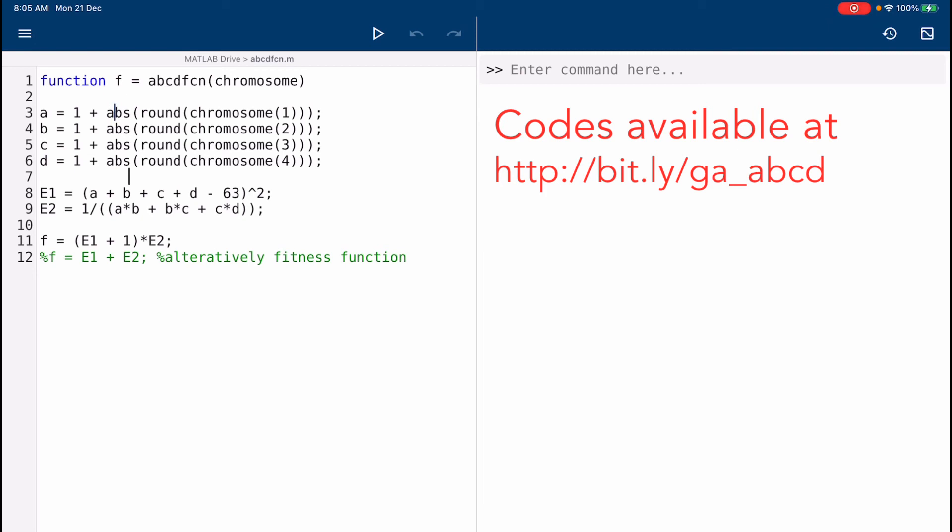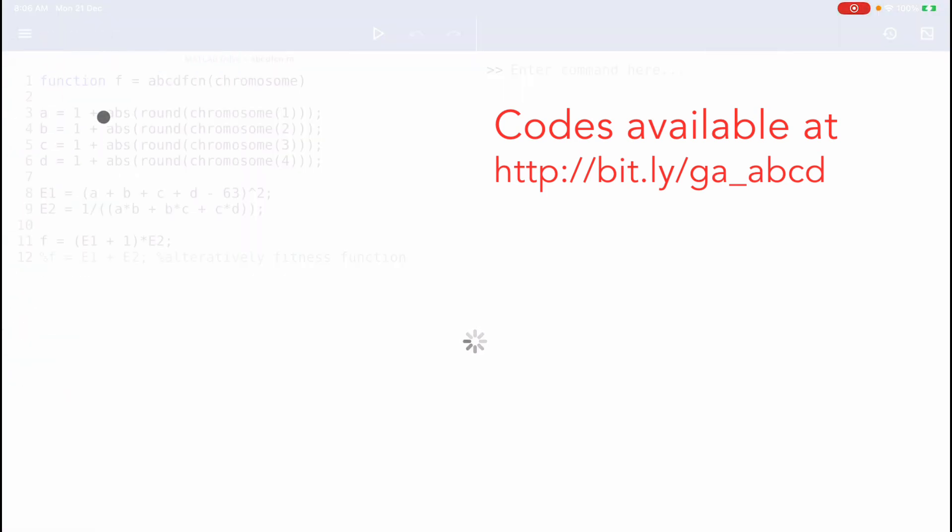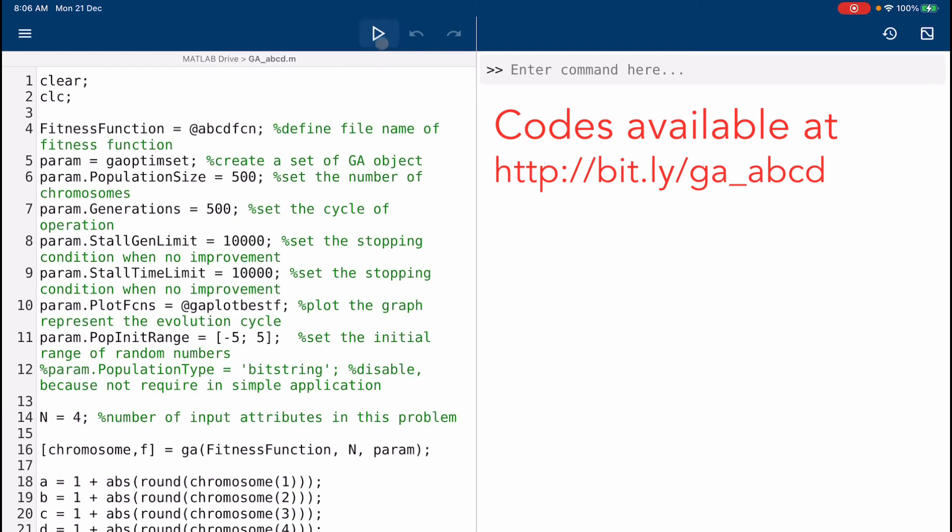Then this is the E1 function, the error one function, and error two function. Finally, combine E1 and E2 to become a fitness minimization function. Alternatively, this is another potentially useful fitness function. But when we run, make sure we run the main file ga_abcd.m. Let's run.